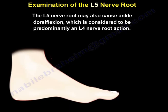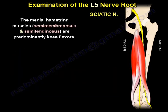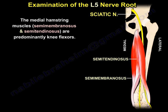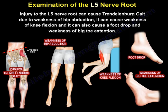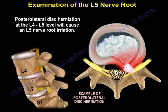The L5 nerve root may also contribute to ankle dorsiflexion, which is considered to be predominantly an L4 nerve root action. The medial hamstring muscles — semimembranosus and semitendinosus — are predominantly knee flexors. Injury to the L5 nerve root can cause Trendelenburg gait due to weakness of hip abduction, weakness of knee flexion, foot drop, and weakness of big toe extension.